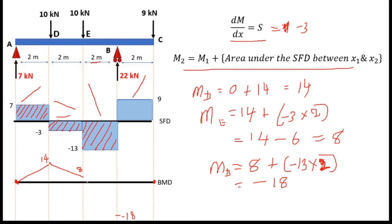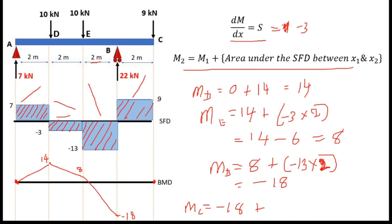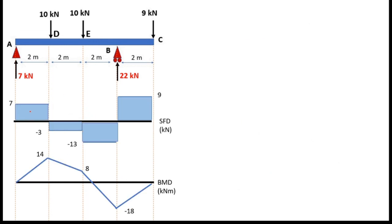I already know the ending point value, but I will verify using the equation for point C: MC = M1 plus area = minus 18 plus (plus 9 times 2) = minus 18 plus 18 = 0. Our calculation is correct. This is the complete bending moment diagram. So this is the complete shear force diagram and bending moment diagram for this beam.